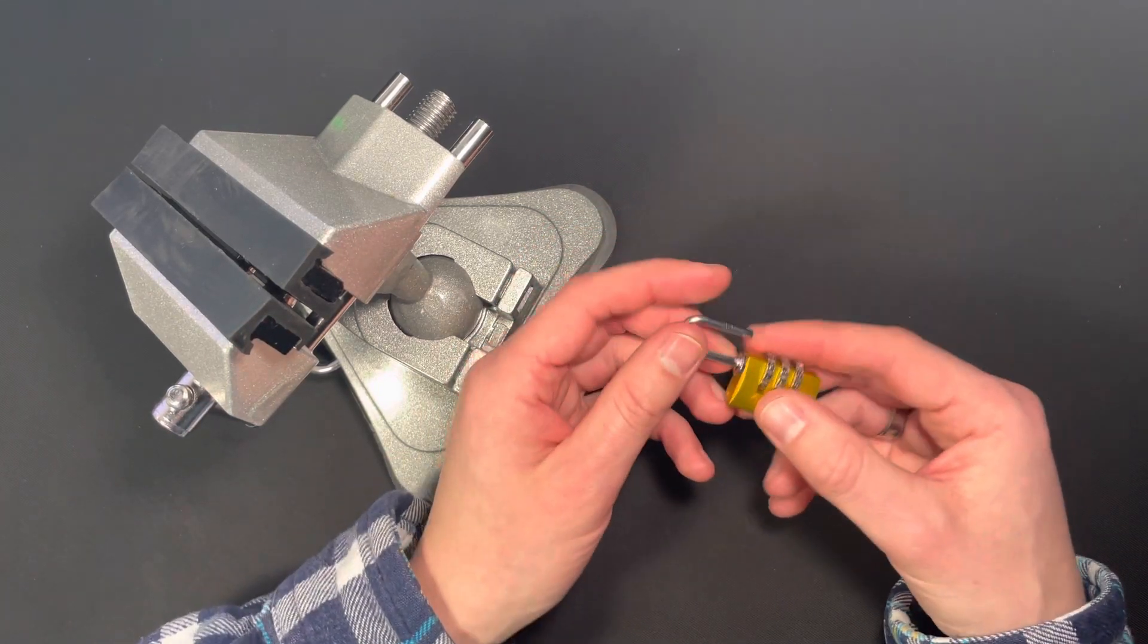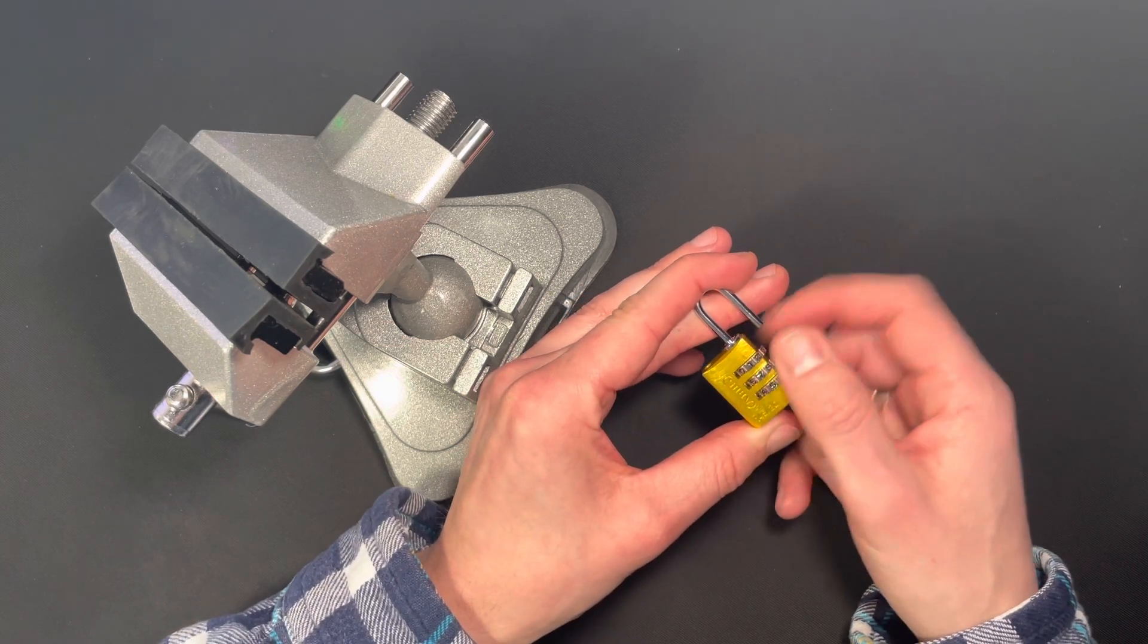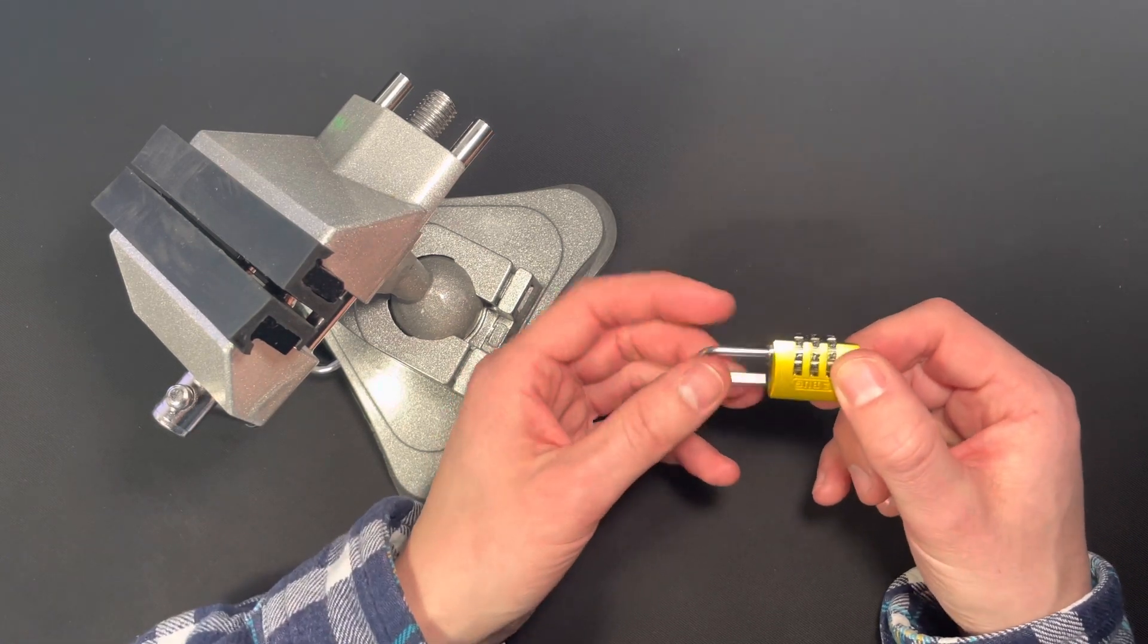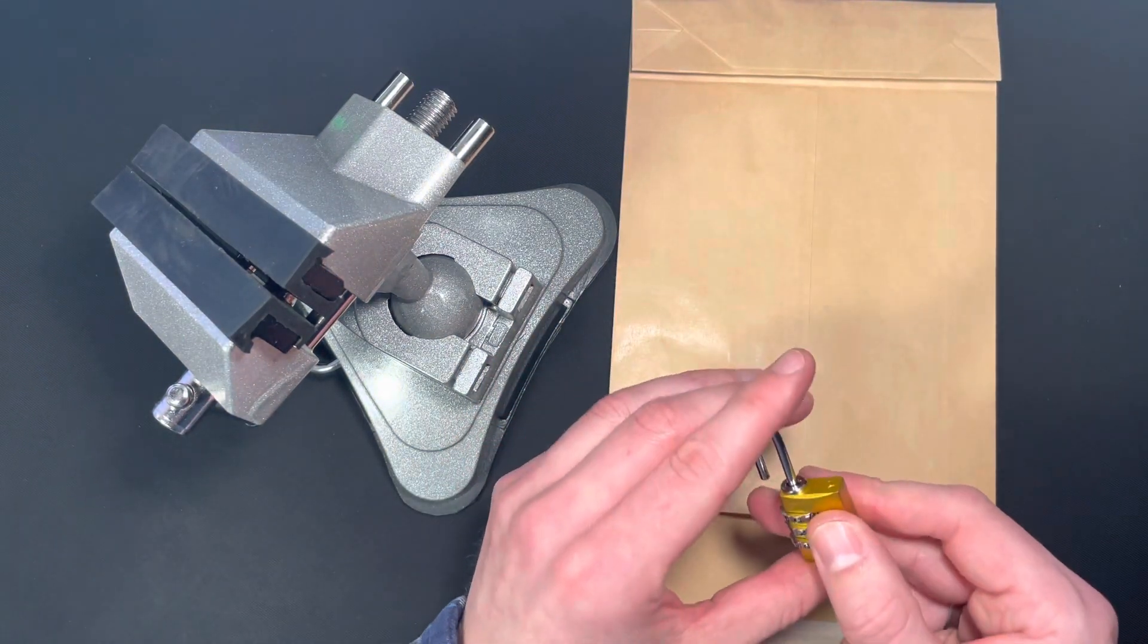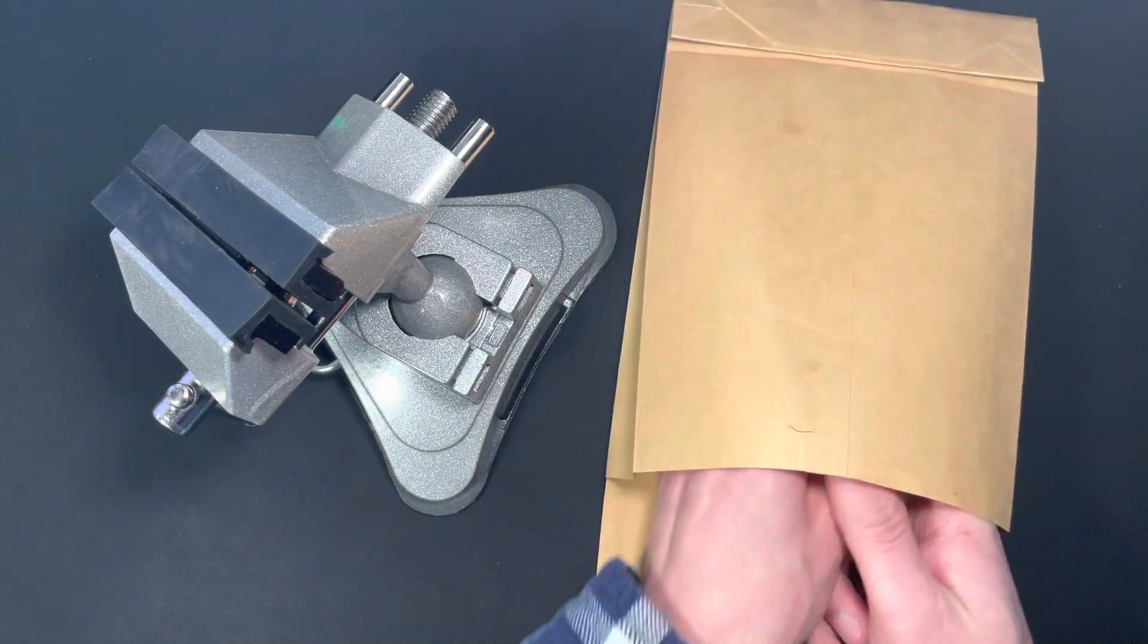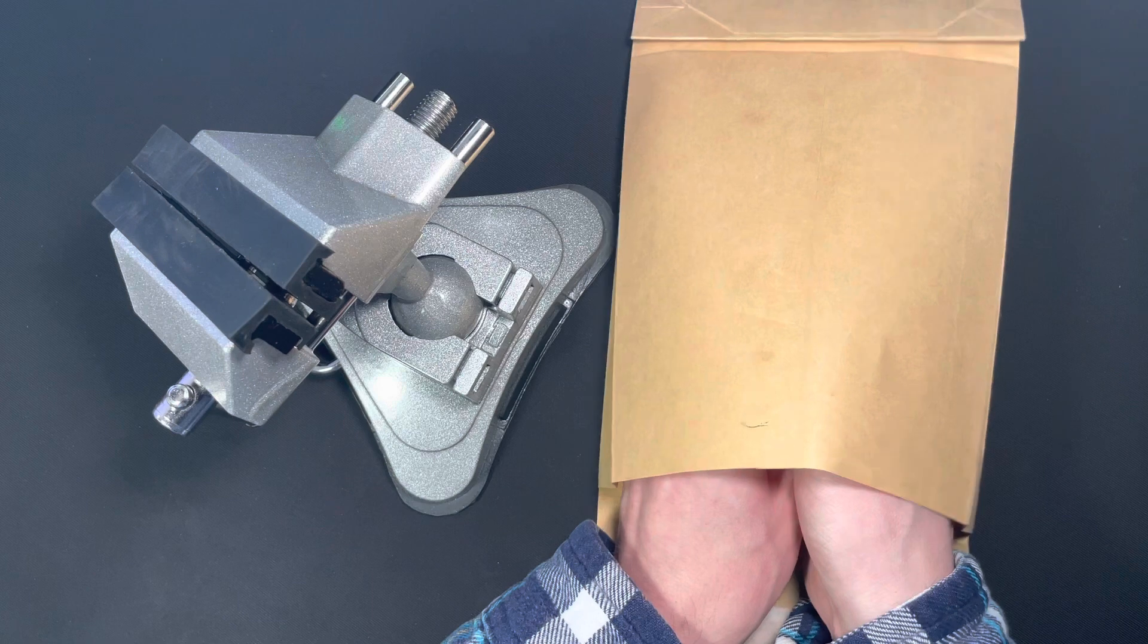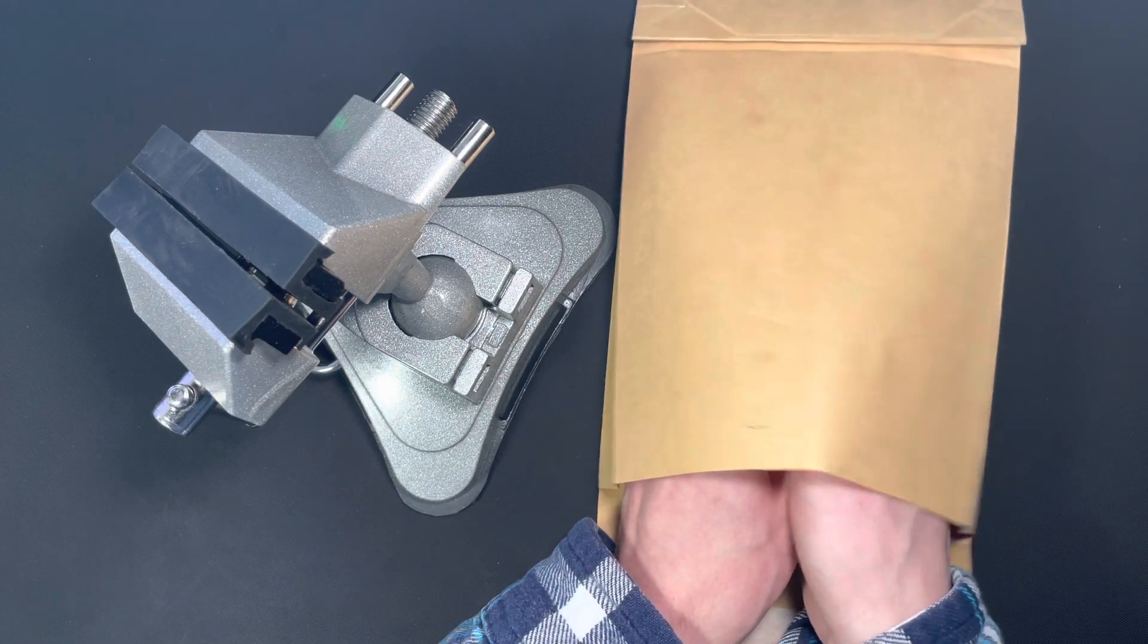So to set a new combination you'll have to turn the shackle and push it down. Then you turn the disks to the digits you want to have and you'll have a new combination. I thought of this envelope to hide myself from knowing the combination I will set now. All right, this should be good.